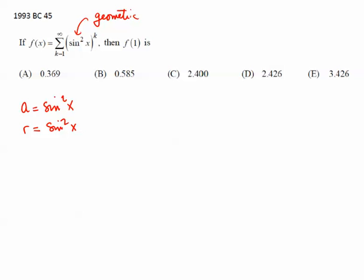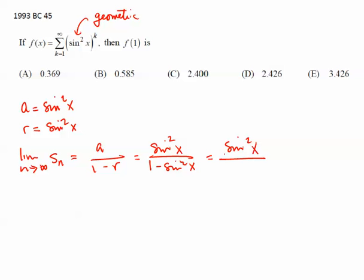Now we can plug in the 1 now or we can plug in the 1 later. I don't think that it really matters at this point. But we know that the limit as n goes to infinity of the nth partial sum would be a over 1 minus r, which is sine squared of x over 1 minus sine squared of x. The 1 minus sine squared of x is cosine squared of x. So this all comes out to be tangent squared of x.